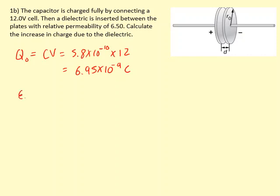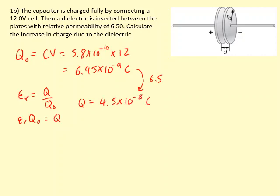Now we work out the charge with the dielectric using εᵣ = Q / Q₀, so Q = εᵣ × Q₀. Multiplying by 6.5 gives Q = 4.5 × 10⁻⁸ coulombs. Since the question asks for the increase in charge, we find the difference between Q and Q₀, which gives 3.8 × 10⁻⁸ coulombs.